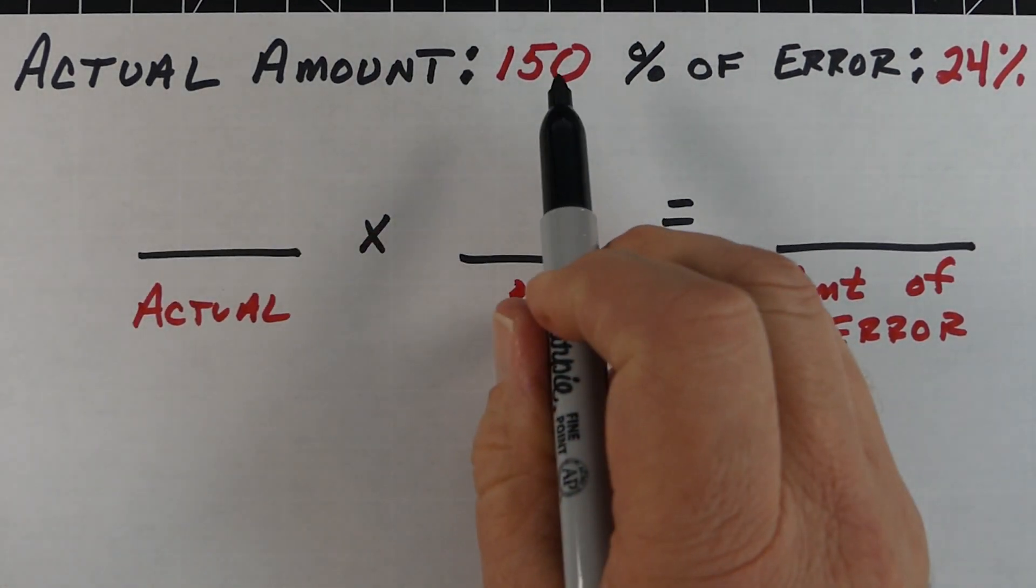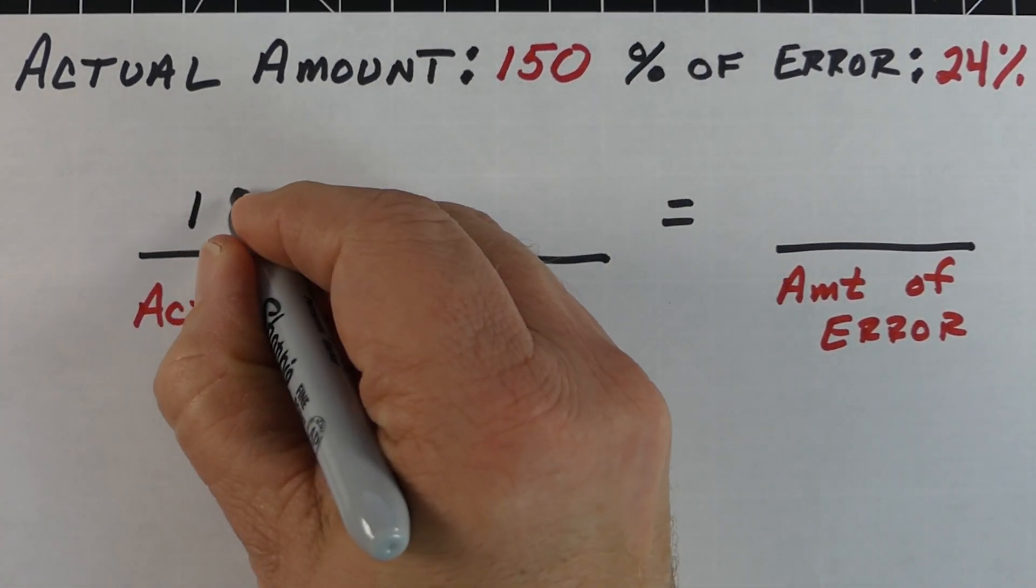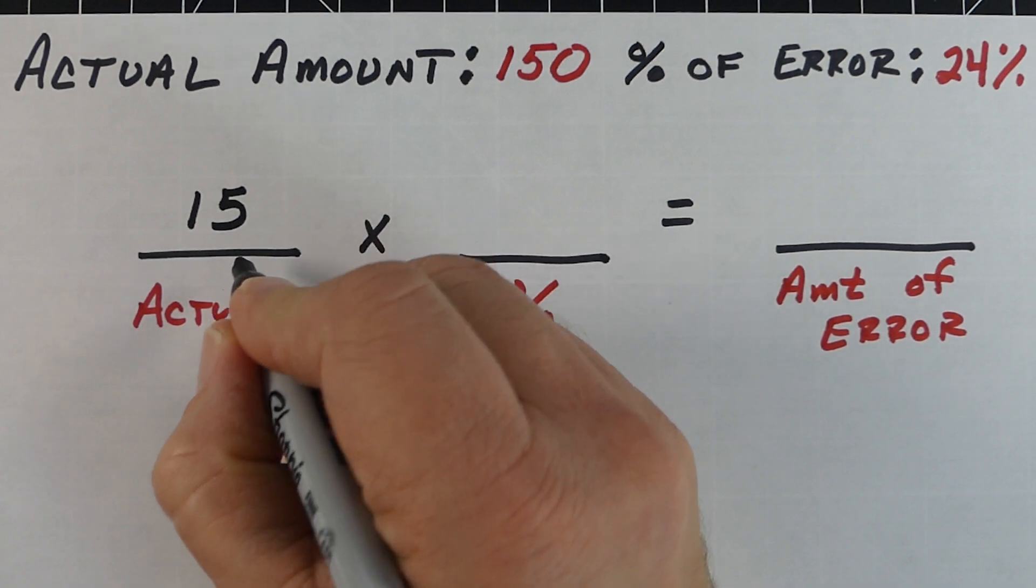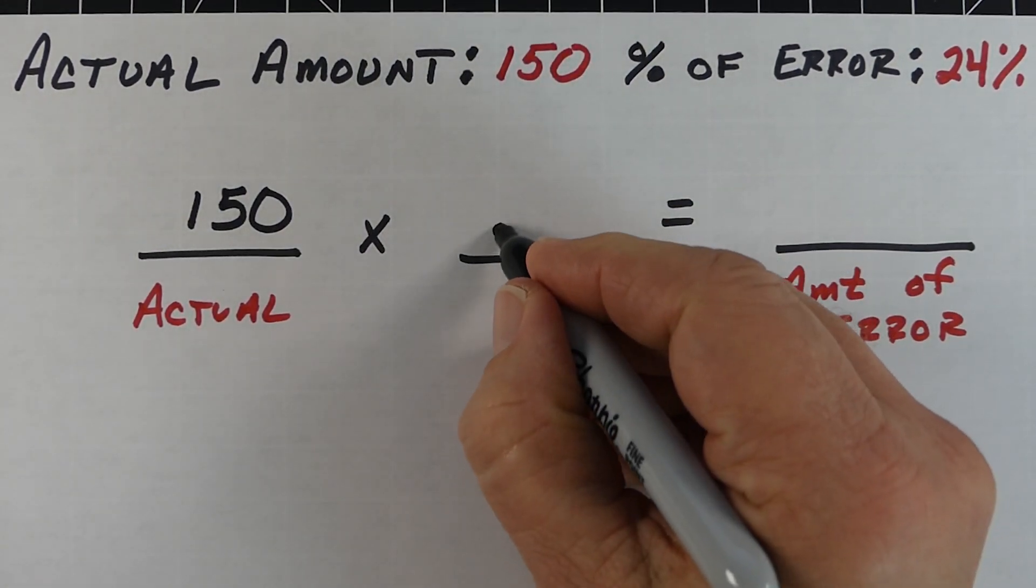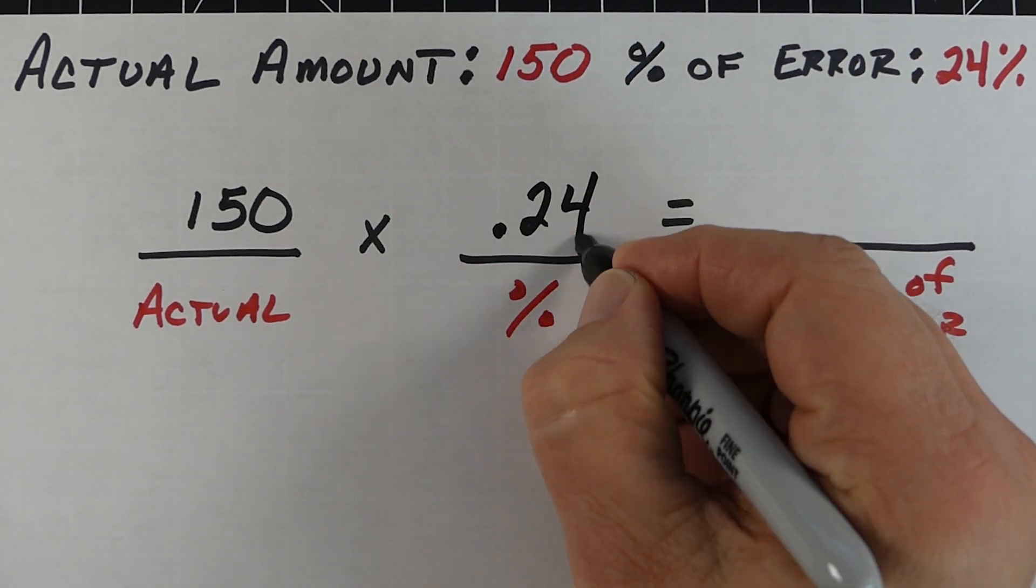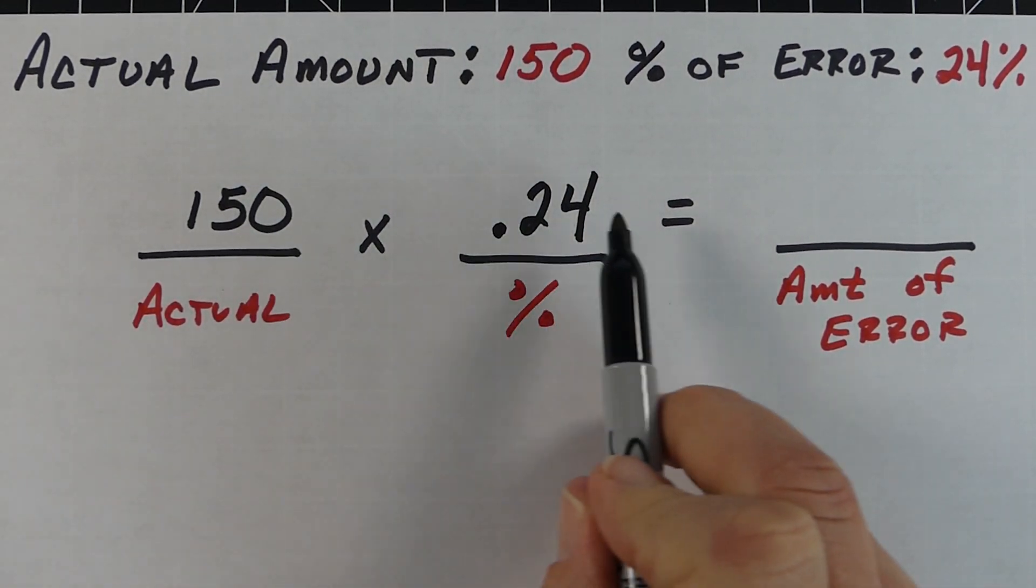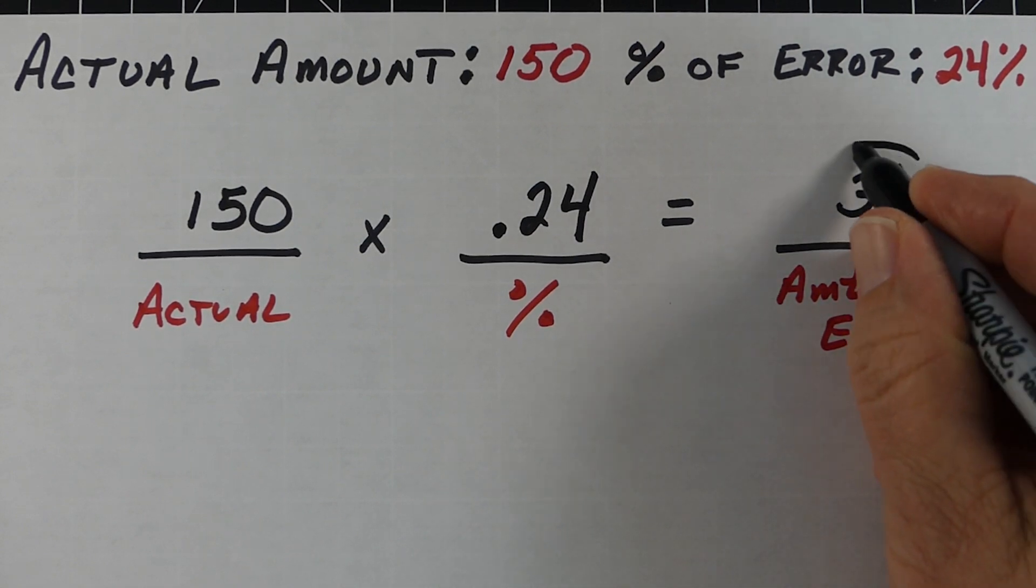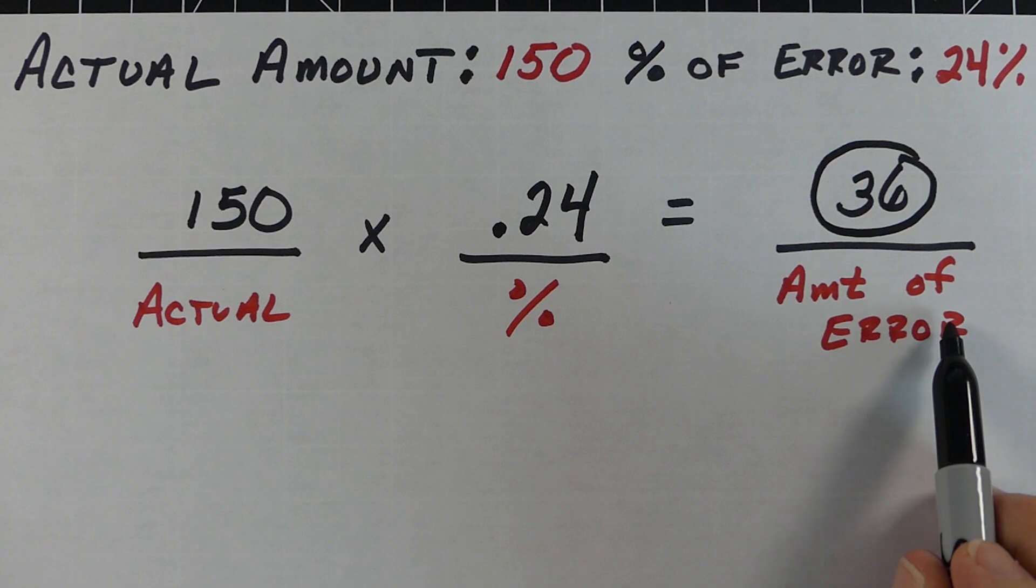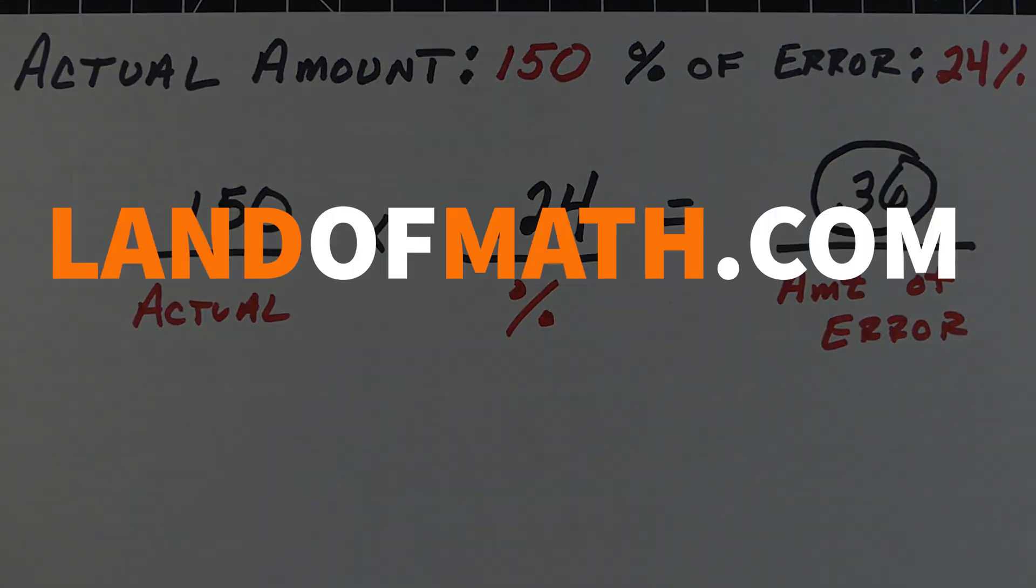Here's the last example. Let's say we had 150 as the real amount, our percent of error was 24%, and we want to know how much we were off - how big was our mistake. We're just going to multiply these two together and we end up with 36, which would be 24% of 150.